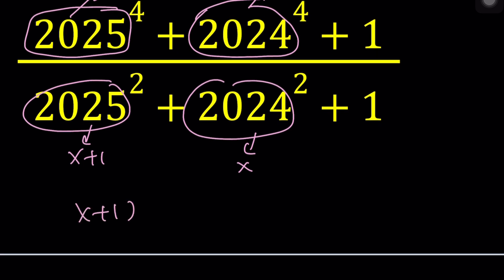We have (x plus 1) to the 4th power plus x to the 4th power plus 1, divided by (x plus 1) to the 2nd power plus x squared plus 1.